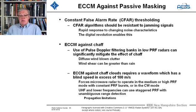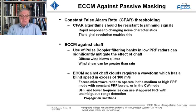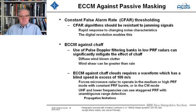ECCM against chaff clouds requires a waveform with a blind speed greater than 100 meters per second, since chaff velocities will clearly be lower than that. This forces microwave radars to operate at medium or high PRFs to separate targets from chaff, or to use a CW mode. At lower frequencies such as UHF, staggered PRFs with unambiguous range detection can be used, but with propagation limitations.